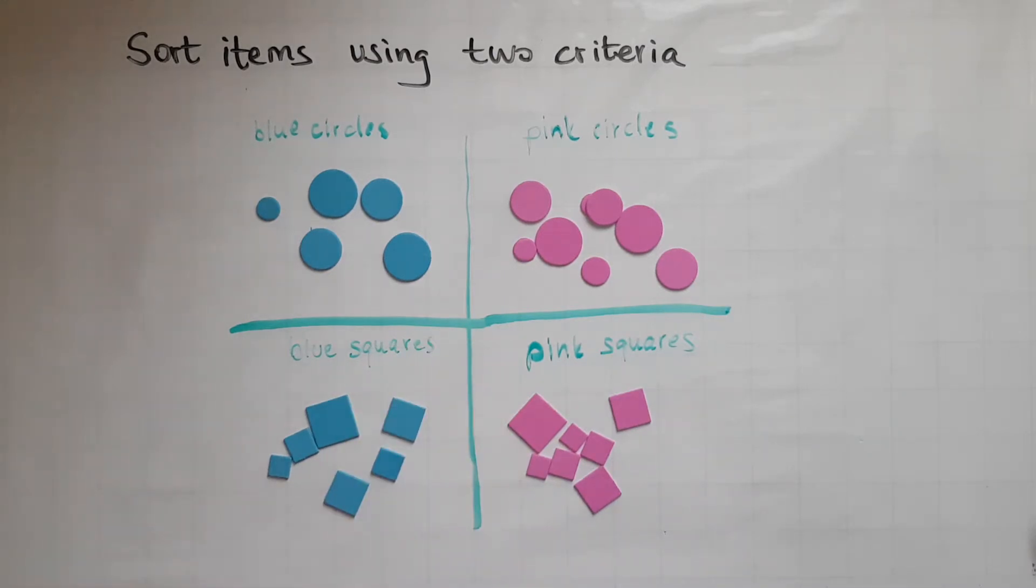So I've sorted these items using two criteria. One was the color. So I've split them into pink and blue. And the other one was the shape.